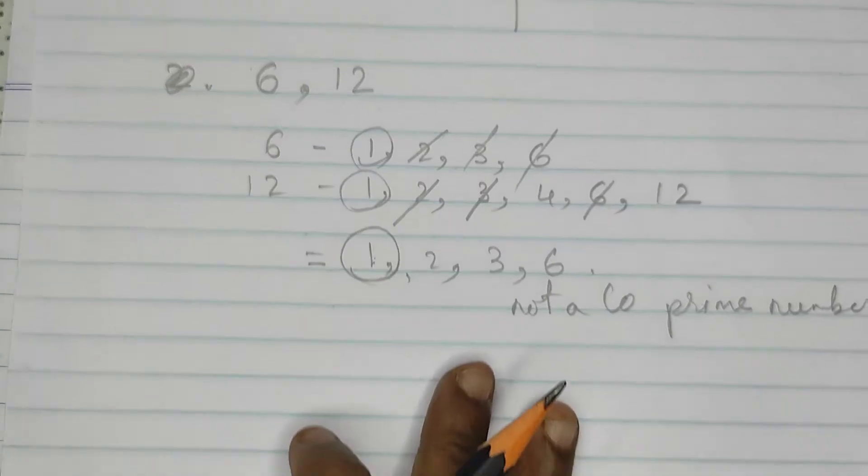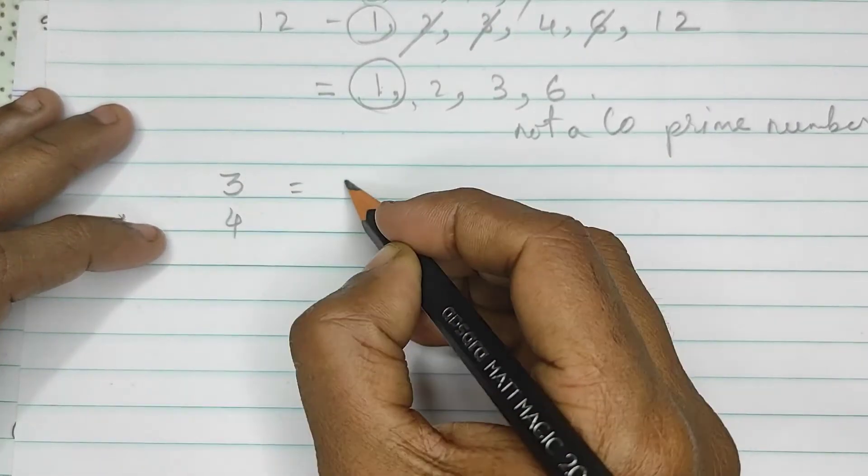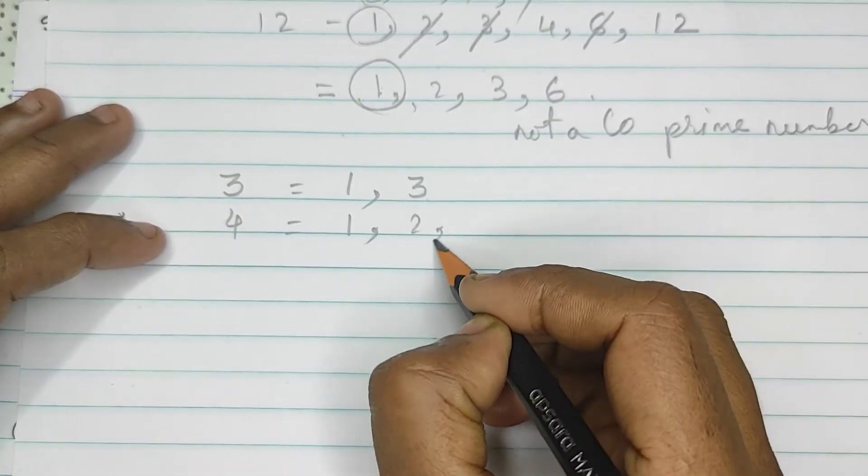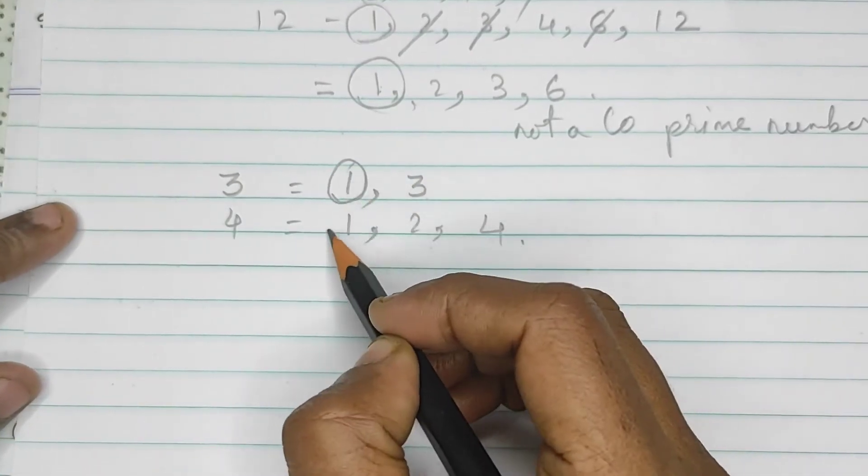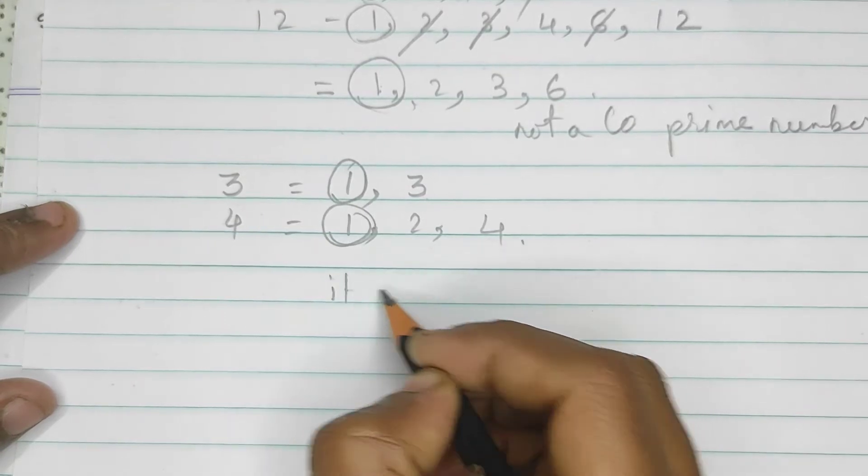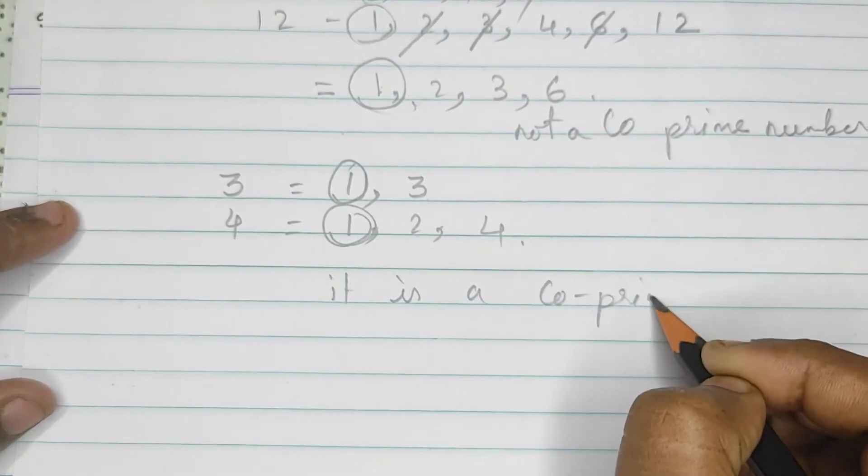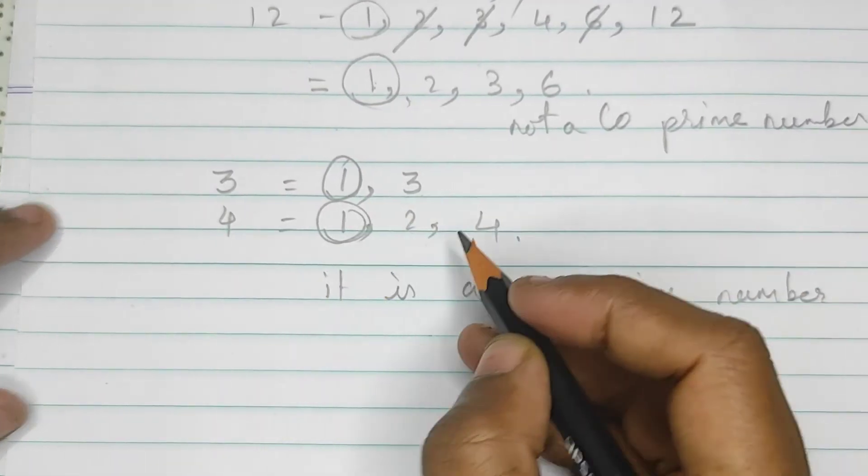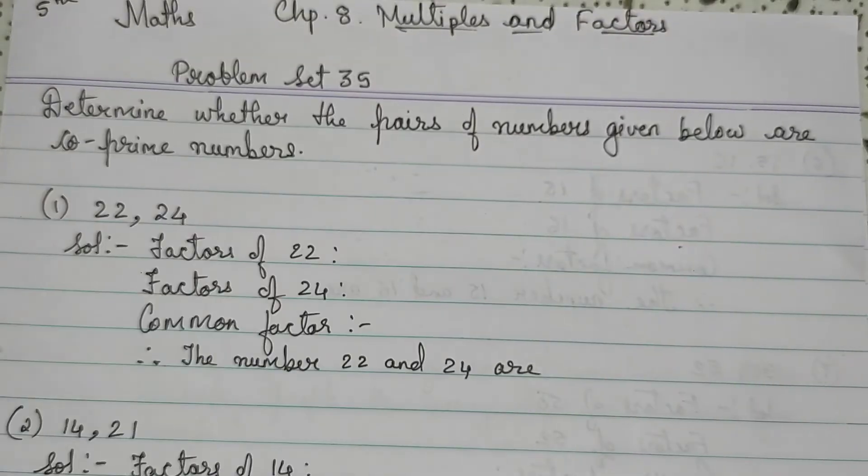Now for co-prime numbers, let's see, we have 3 and 4. So, 3 is divisible by 1 and 3. 4 is divisible by 1, 2 and 4. So, nothing is matching here, nothing is common rather than 1. So, it is a co-prime number. Because here only 1 is common, apart from 1 there is no other common factor, so this is a co-prime number.